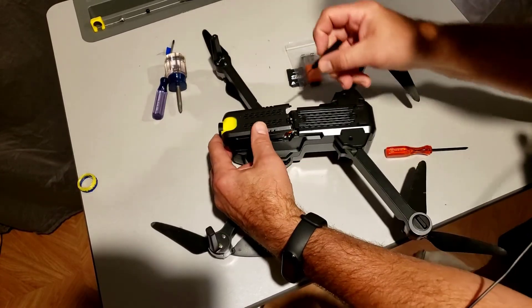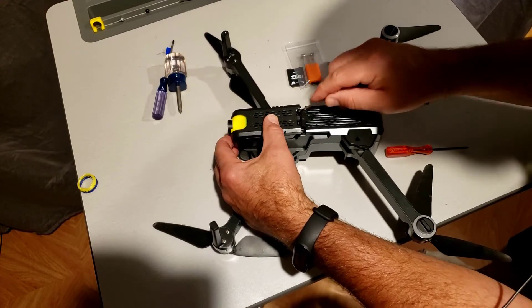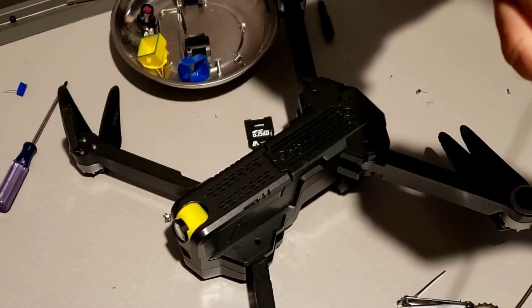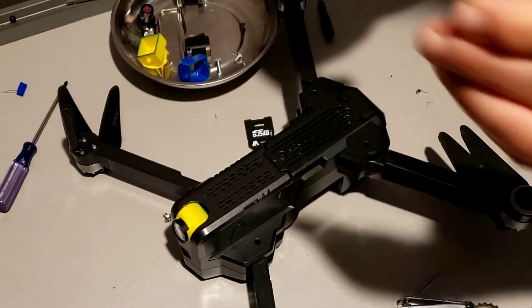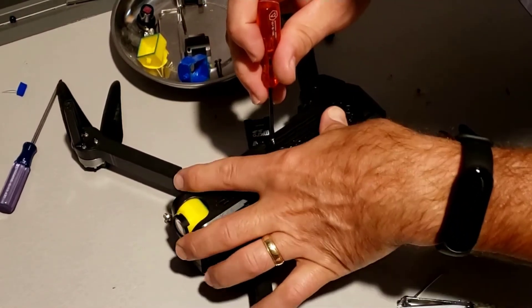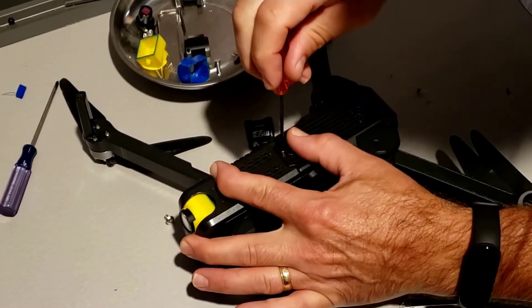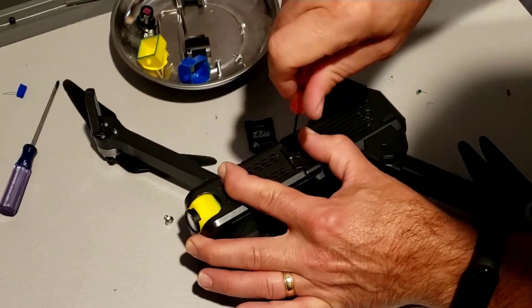Let's find that last little screw from the tray and button her back up. All righty friends, so there you have it, an adjustable non-fisheye lens for the F11 Pro.